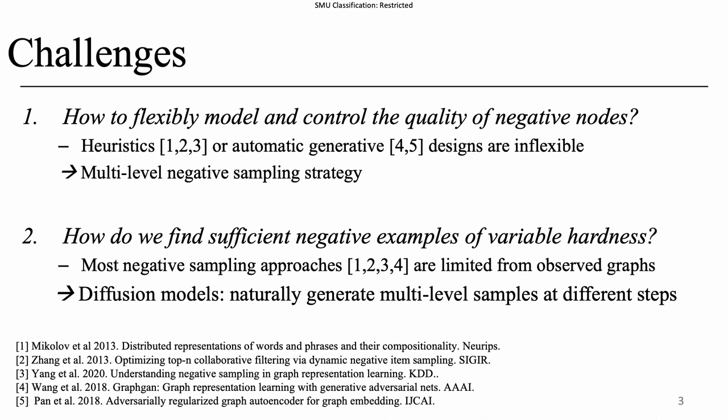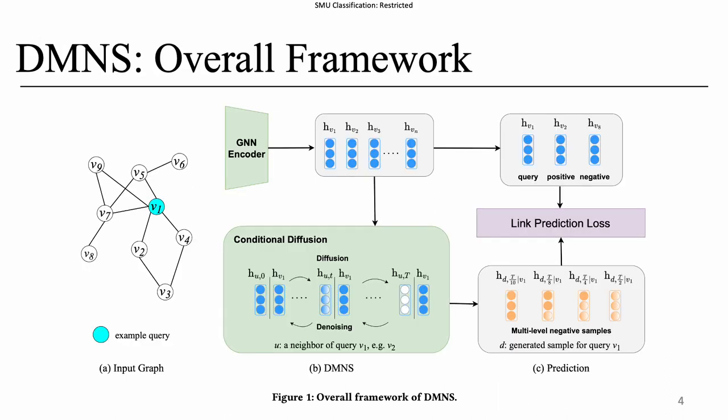We propose to synthesize more negative nodes in the latent space. We leverage diffusion models, which can naturally generate multi-level samples at different noise levels. The overall framework, DMNS, is presented in this figure. We employ a standard GNN encoder to obtain node embeddings, which captures the content and structural neighborhood information. Next, we train a conditional diffusion model to learn a neighborhood distribution conditioned on the query node. From the model, we sample several output embeddings at different time steps, which serve as the negative examples at multi-level hardness for contrastive learning.